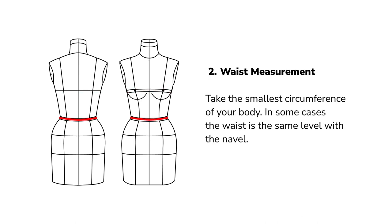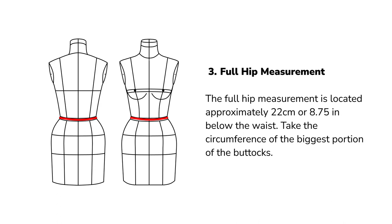Waist measurement: measure the smallest circumference of your body. In some cases, the waist aligns with the level of the navel. Full hip measurement: this is typically located approximately 22 centimeters below the waist. Measure the circumference of the widest part of the buttocks.